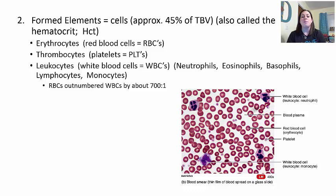Red blood cells actually outnumber white blood cells about 700 to 1, so you will have far more red blood cells than white blood cells. You can see this in the microscopy picture. On an exam, you should be able to identify a red blood cell, a white blood cell, and a platelet from a picture—this particular image is found on page 665.